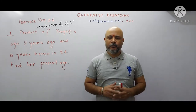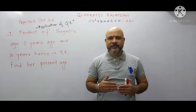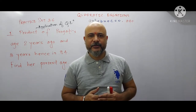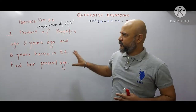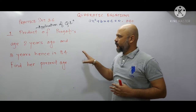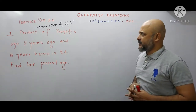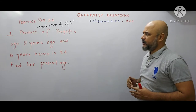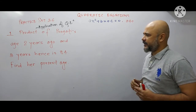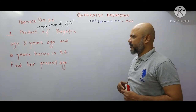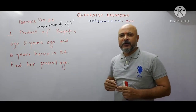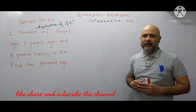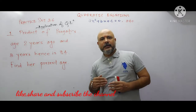Practice Set 2.6 is completely based on application of quadratic equations. The very first question of Practice Set 2.6 is: the product of Prakriti's age two years ago and three years hence is 84. Find her present age. First we'll write the condition and frame the equation.